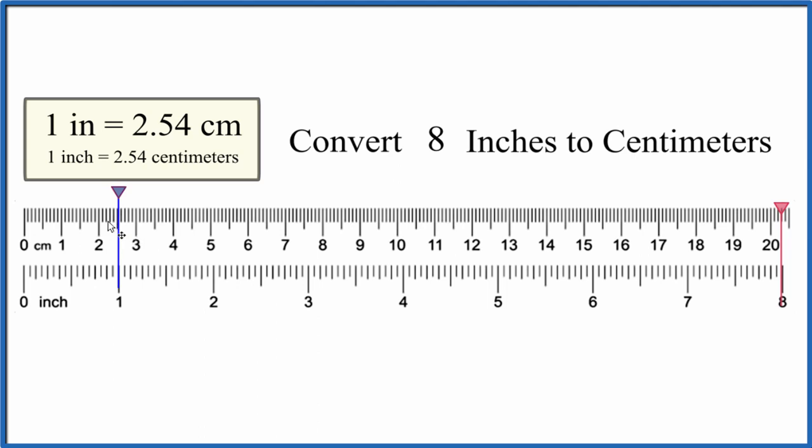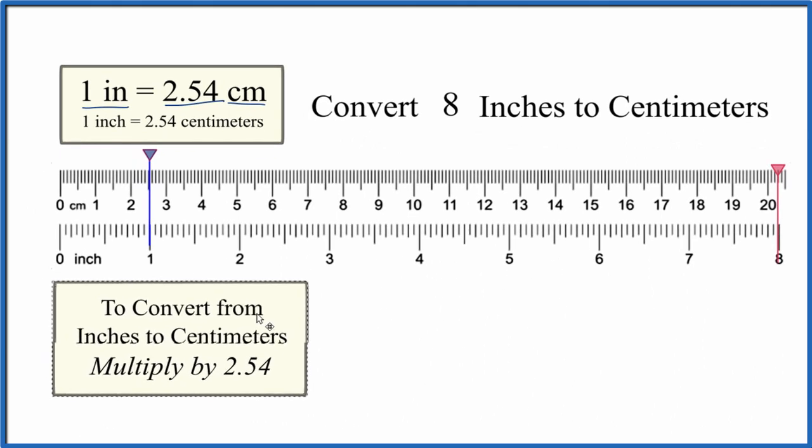In fact, 1 inch equals 2.54 centimeters, and we can use that to convert 8 inches to centimeters. So when you're converting from inches to centimeters, you multiply the inches times 2.54.